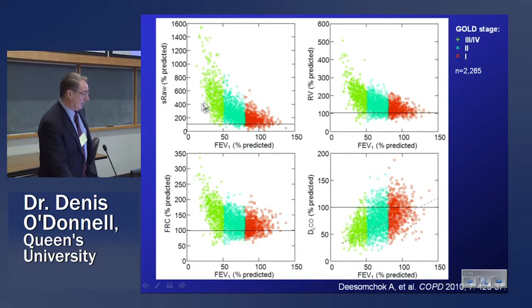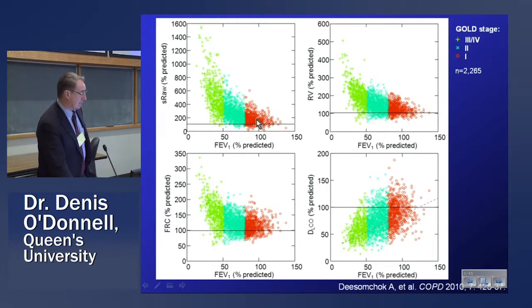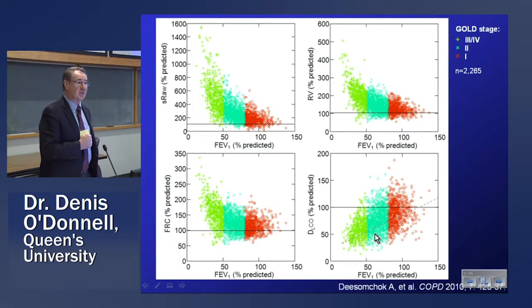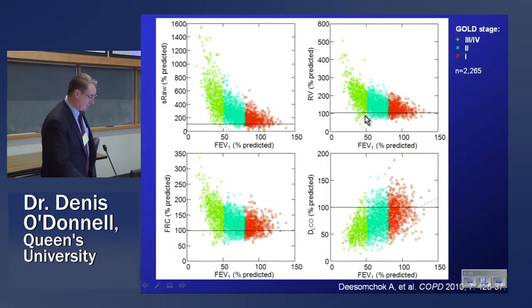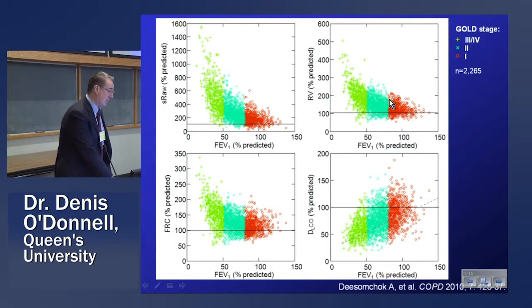People with so-called GOLD 1 — between 80 and 100% or greater than 80% predicted FEV1 — have abnormalities in airway conductance, pulmonary gas trapping, static lung hyperinflation, and a reduced surface area for gas exchange in highly variable quantities. That's something to bear in mind as we try to come up with possible physiological phenotypes, given this vast heterogeneity of the disease. GOLD 1 isn't really much different from GOLD 2 in terms of physiological impairment.